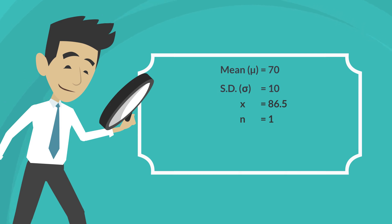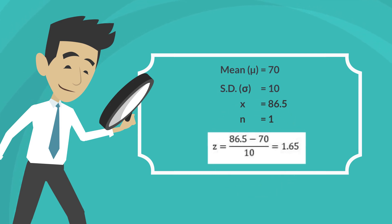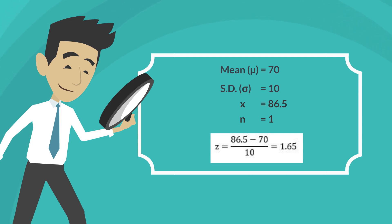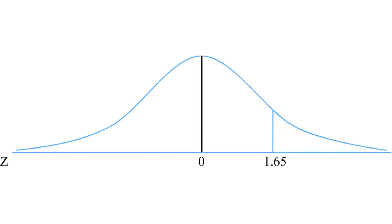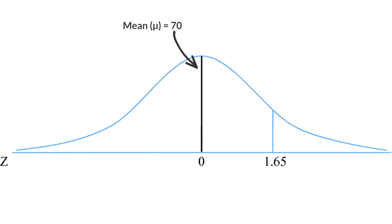Here is how we calculate the z-score: z equals 86.5 minus the mean of 70, divided by the standard error of 10, which gives us a z-score of 1.65. So the score of 86.5 is 1.65 standard deviations away from the mean score of 70.